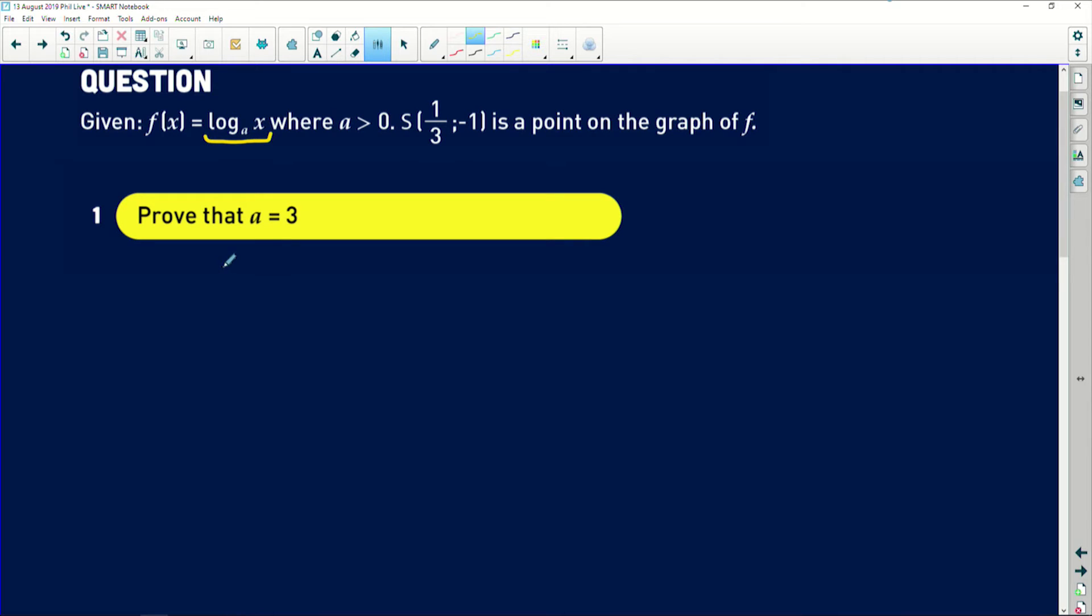If you saw our theory video earlier, if we have y equals log base a of x, by exponent laws it's basically saying that if we want to find x, we take the same base and we raise it to the exponent y. So if we apply that logic to this graph here, we've got f(x) equals log base a of x and we've been given S. So we know that the y value is -1 at S and log base of whatever a we are using and we substitute in x to 1/3, that equation is sound.